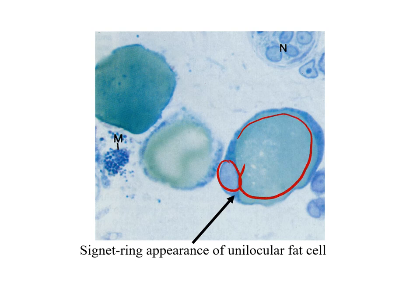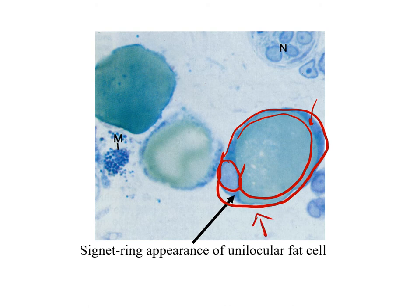In the unilocular adipocyte, there is one single fat droplet and the nucleus is pushed to the periphery. The blue area represents the cytoplasm. In slides where alcohol and xylene are not used, the fat droplet still exists and can be stained directly, so there is no loss of fat droplets. In the previous slide, the spaces were left after tissue processing.